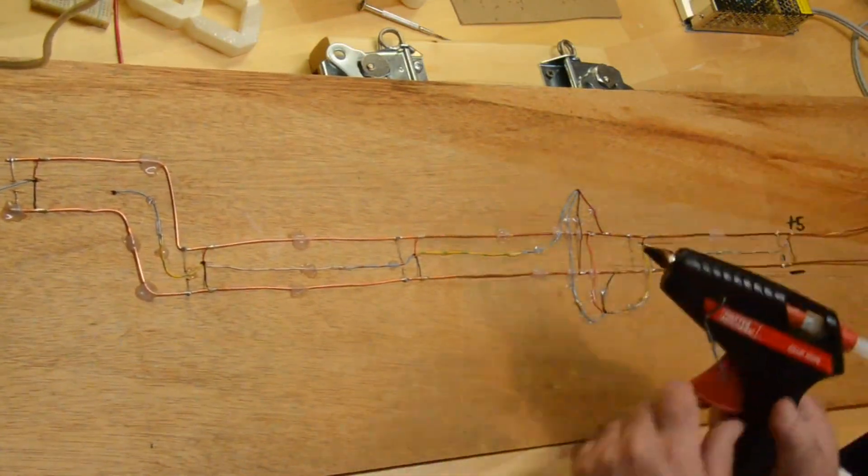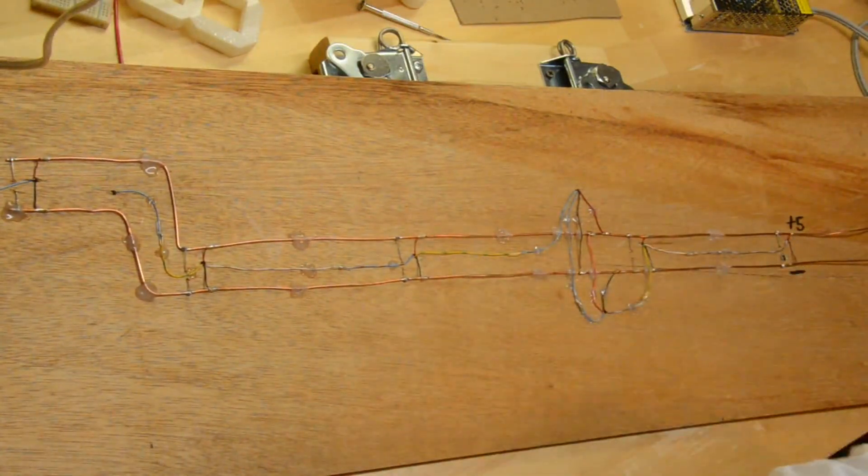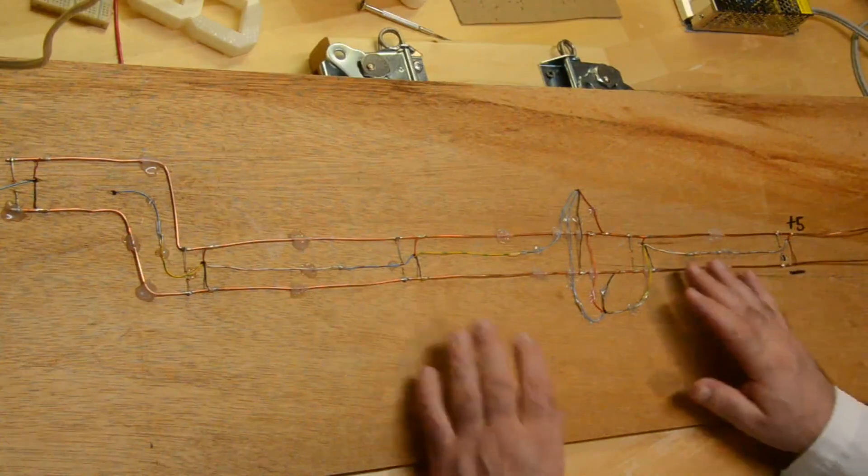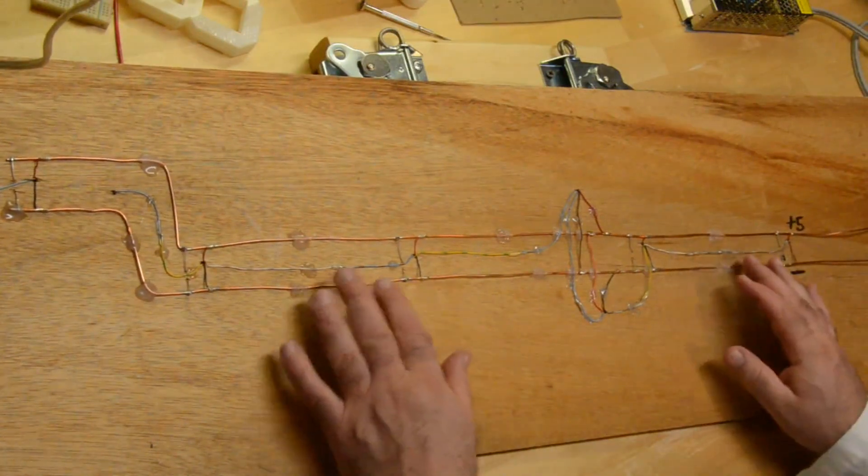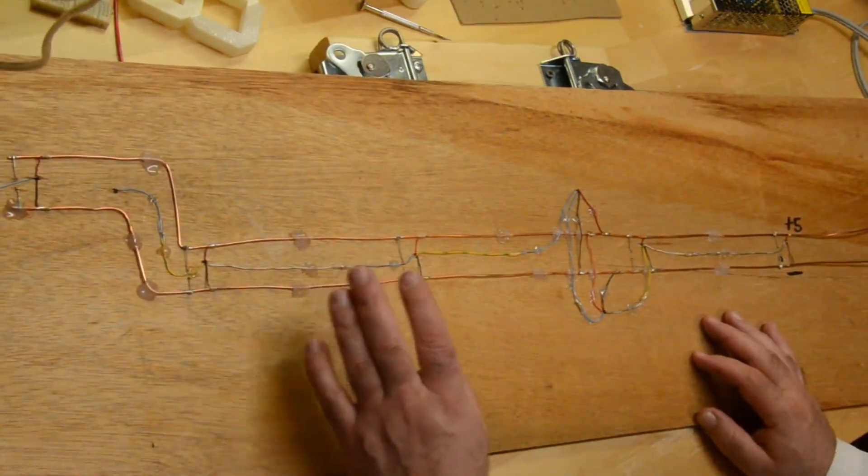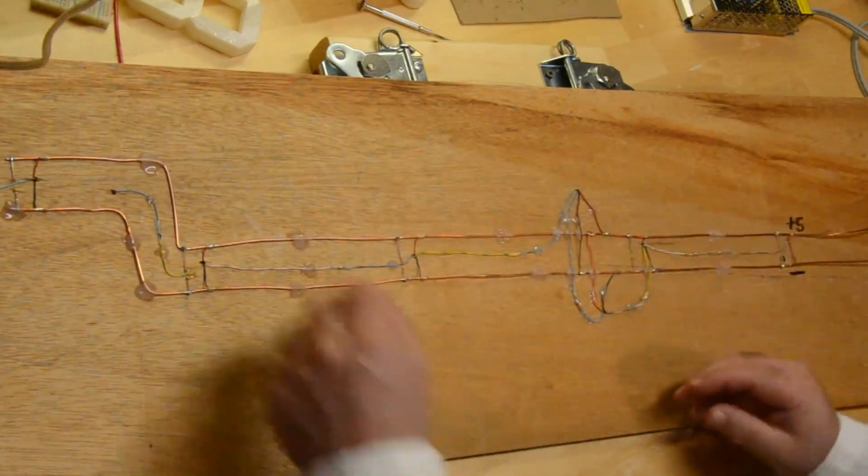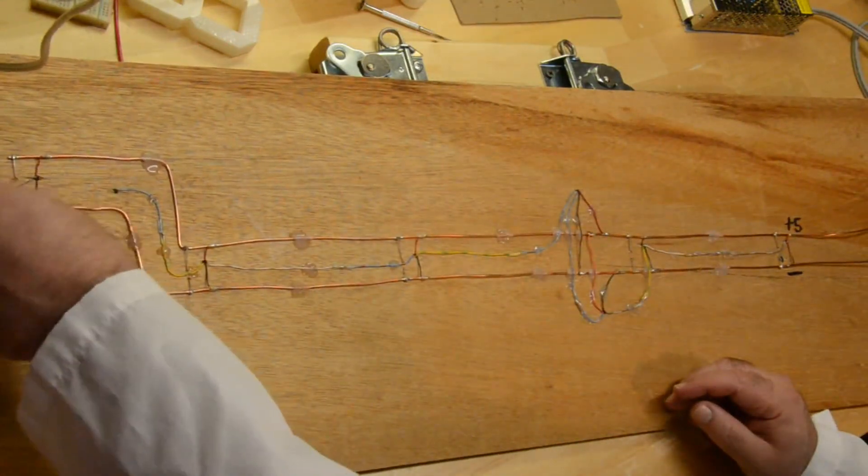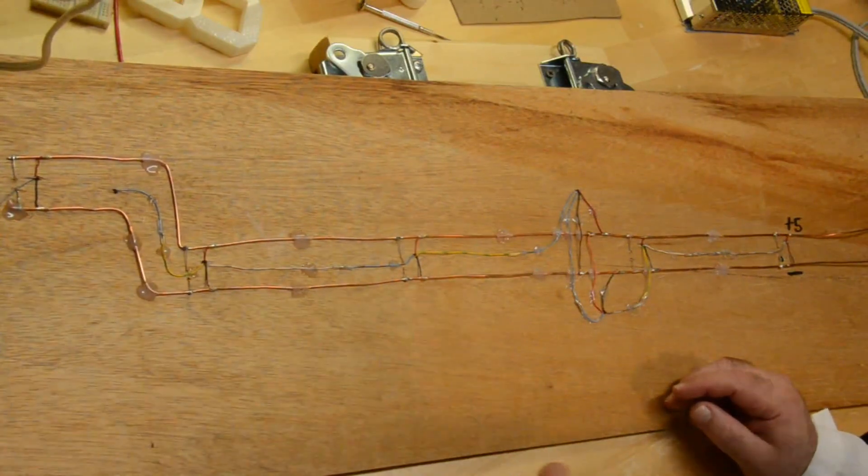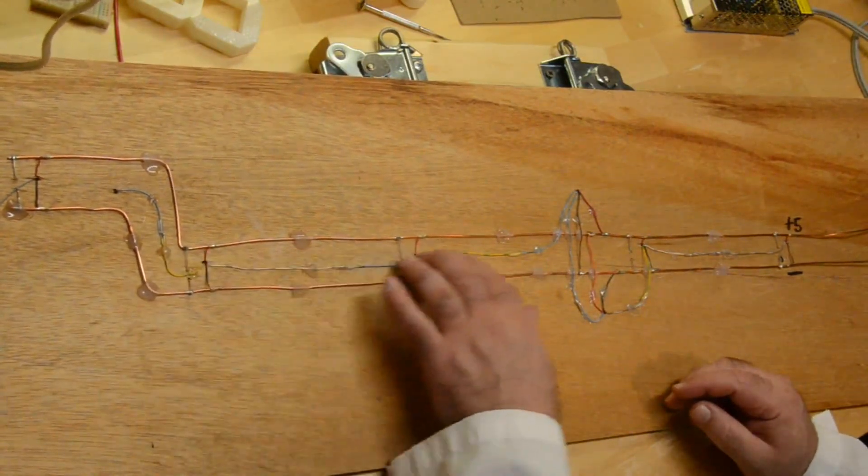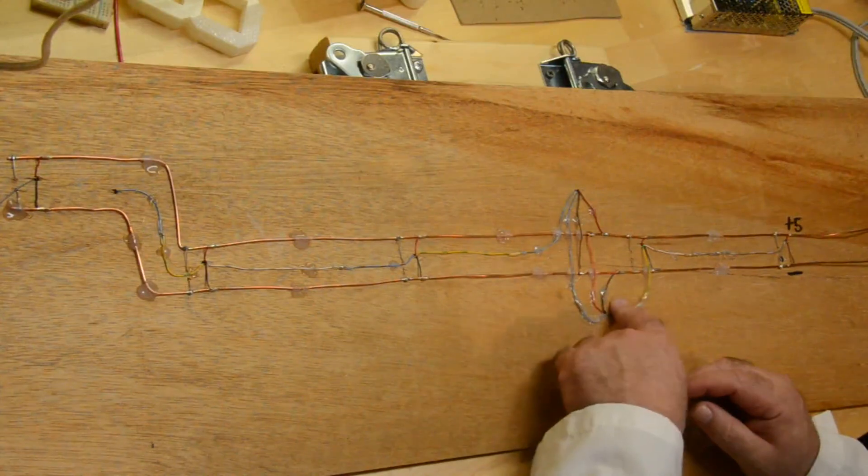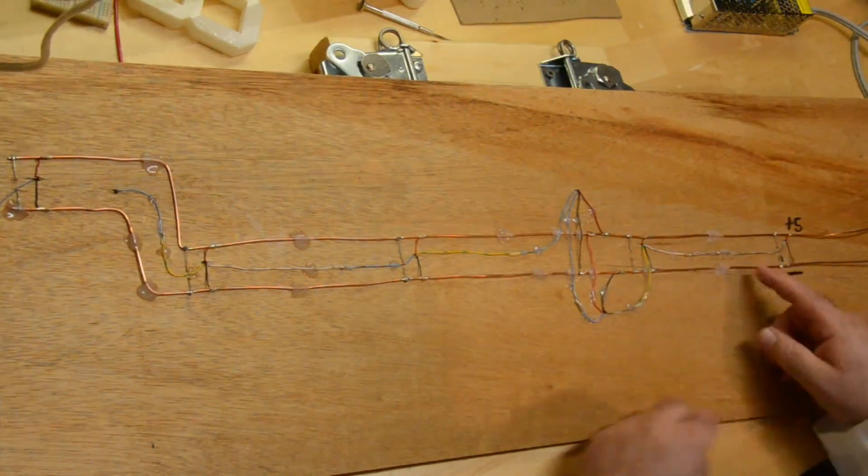So I just finished hot glue tacking down all the wires. Trimmed them, soldered them all together. I tacked them all down. As you can see here, the idea is to make sure that they don't get tangled or snagged on things. This is the main data input that's not yet been hooked up. And this is the data line that daisy chains between all the different digits and the colons and so on.